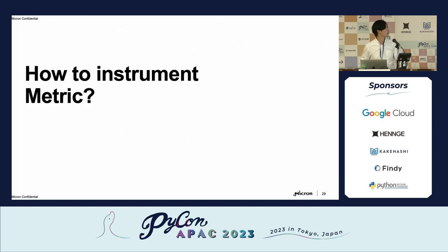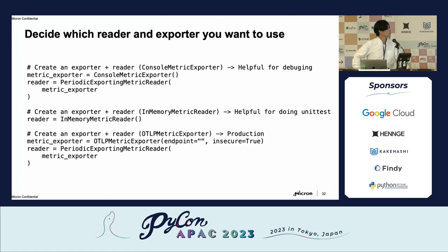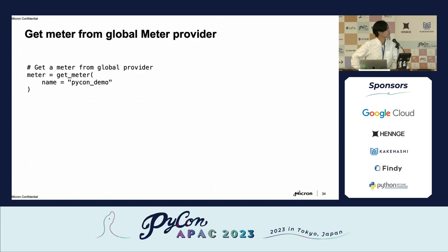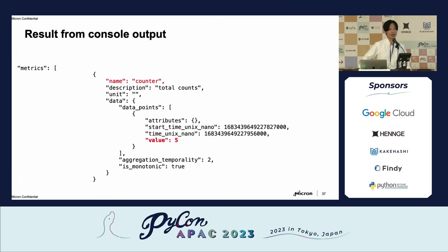How about metrics? OpenTelemetry also provides a metrics SDK. I'll briefly go through it because there is a current challenge I'll mention. Looking at the metrics component, it's similar — we initialize a meter provider, get the meter, create the instrument, and start measuring. However, if you look at the metrics output, when using only the OpenTelemetry metrics SDK, we don't find the trace ID and span ID in the output. We only get the value. That part is missing.